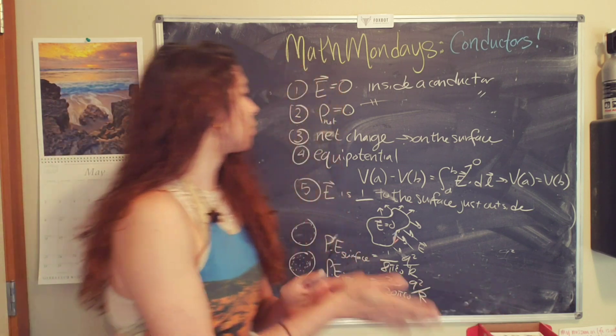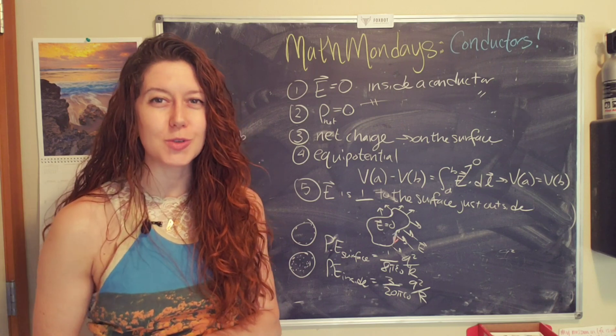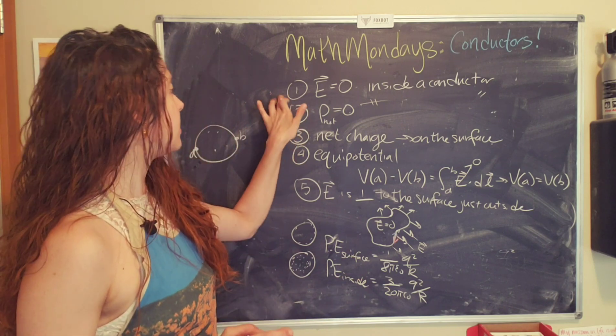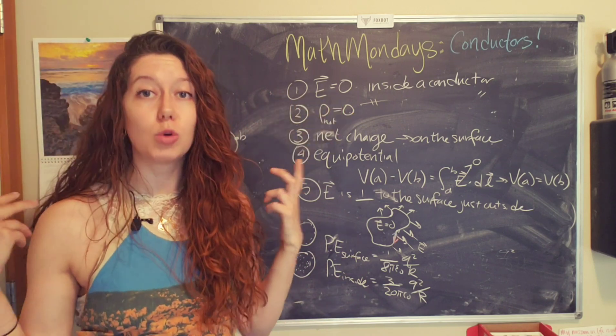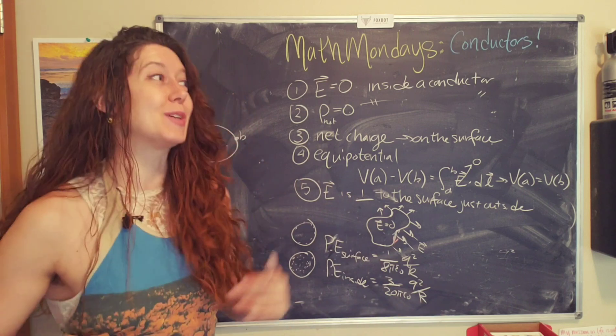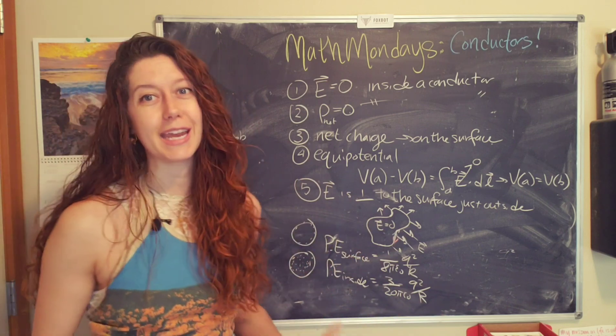Okay. So those are the main properties of conductors. Super cool. This, the electric field equaling zero inside a conductor is also the reason why Faraday cages are a thing.